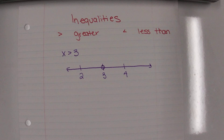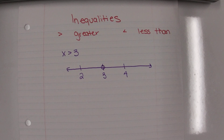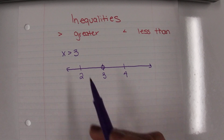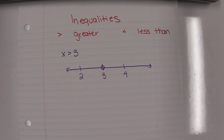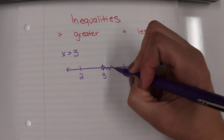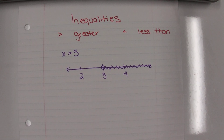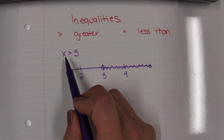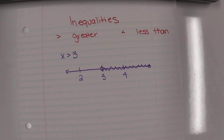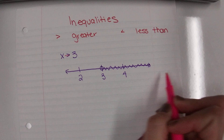The open circle means that while we're not including three, we can get as close to three as we want — we just can't actually be on three. Since x is greater than three, we include all numbers greater than three, which are to the right on the number line. If there's no line underneath the symbol, we use an open circle. And since the symbol looks like an arrow pointing to the right, we shade to the right.